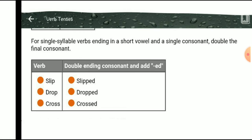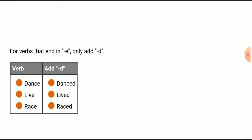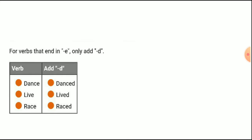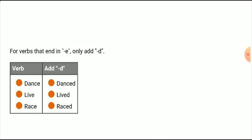For verbs that end in 'e', only add 'd'. For example, the verbs are 'dance', 'live', and 'race'. We do not add double ending consonants; we only add 'd' at the end. So 'dance' becomes 'danced', 'live' becomes 'lived', and 'race' becomes 'raced'.